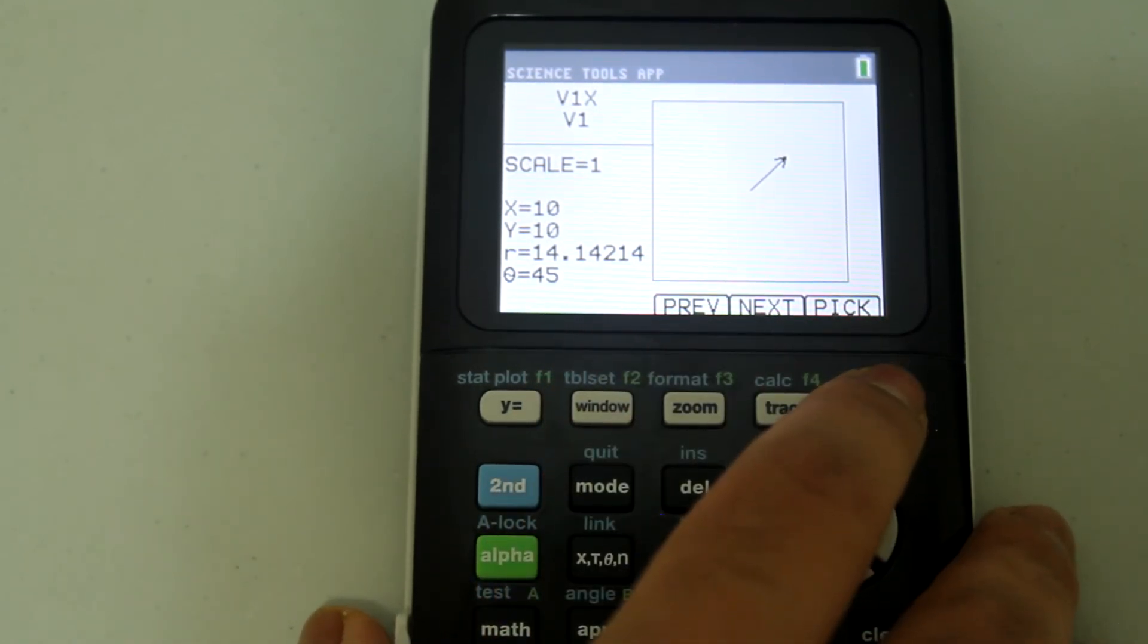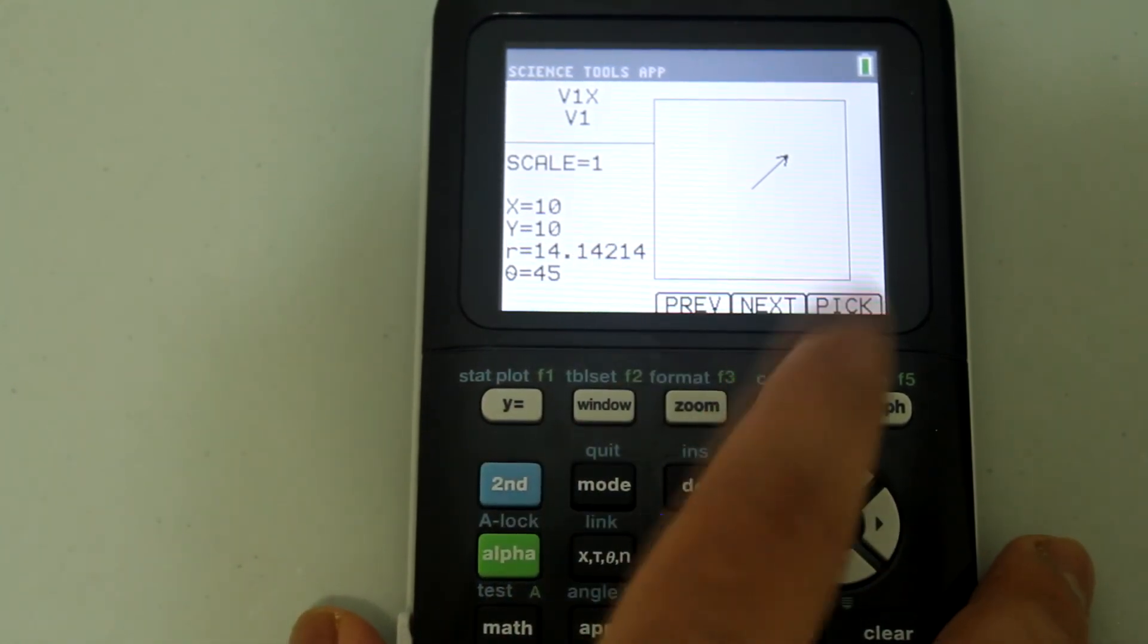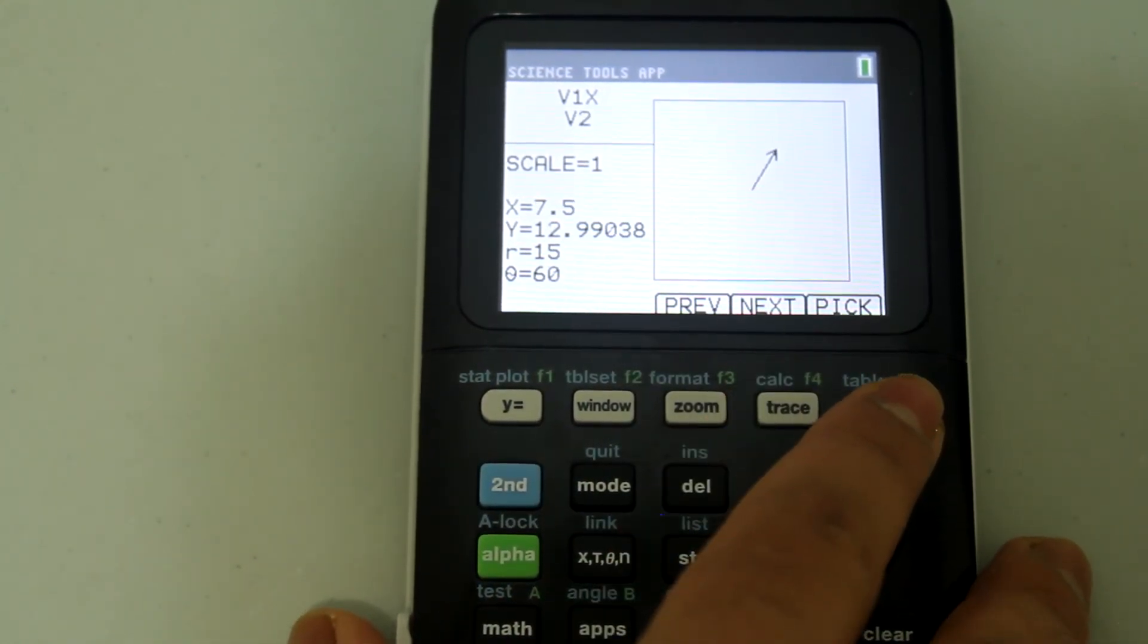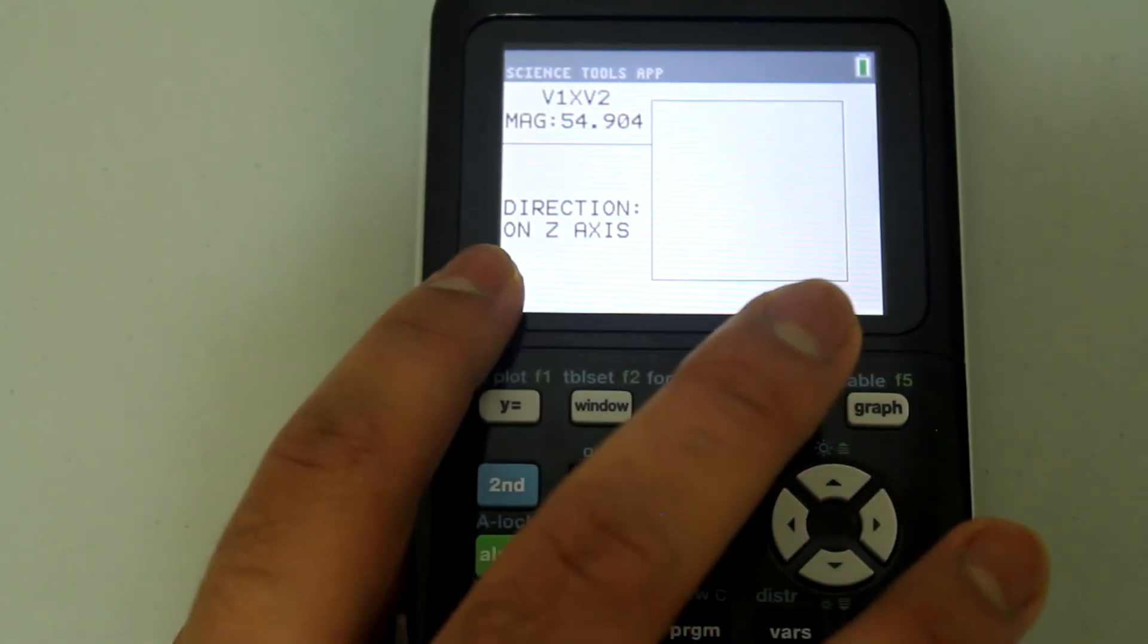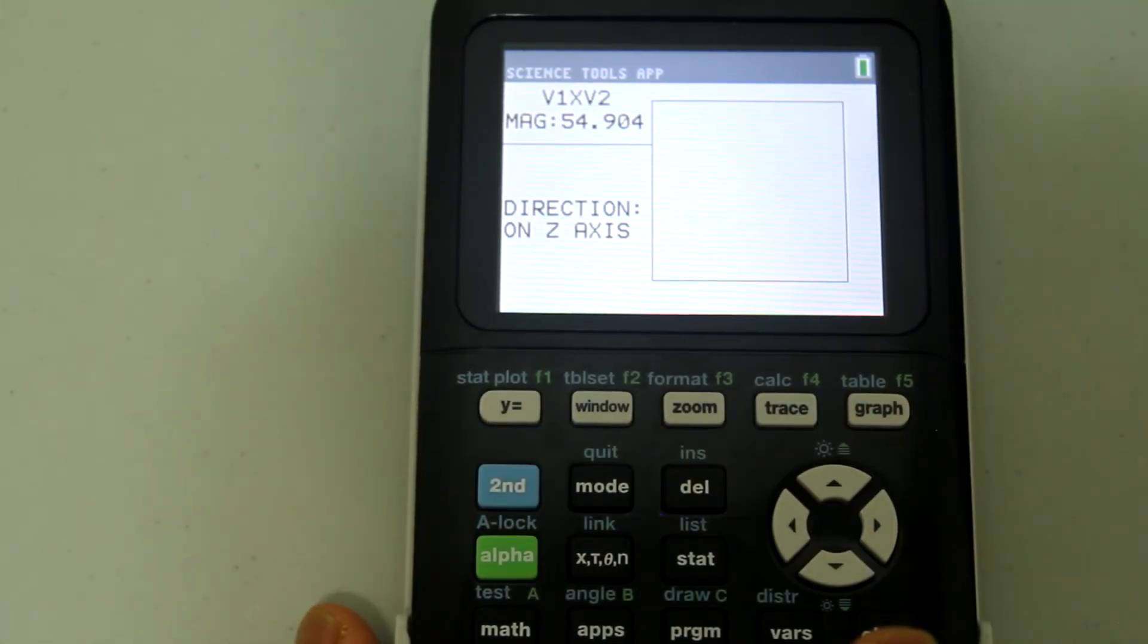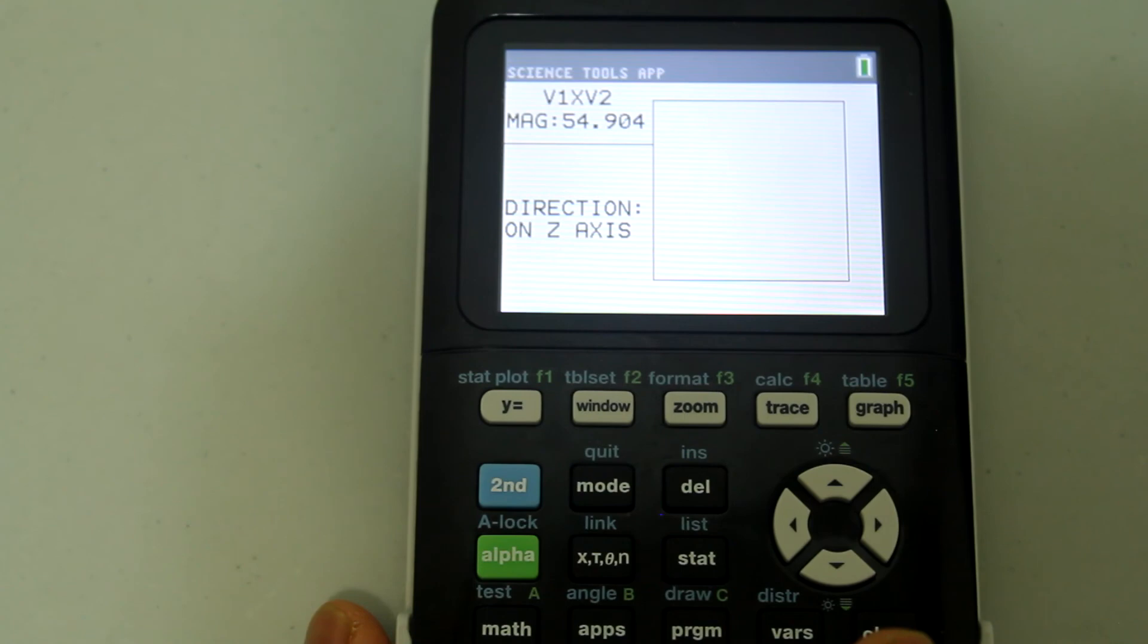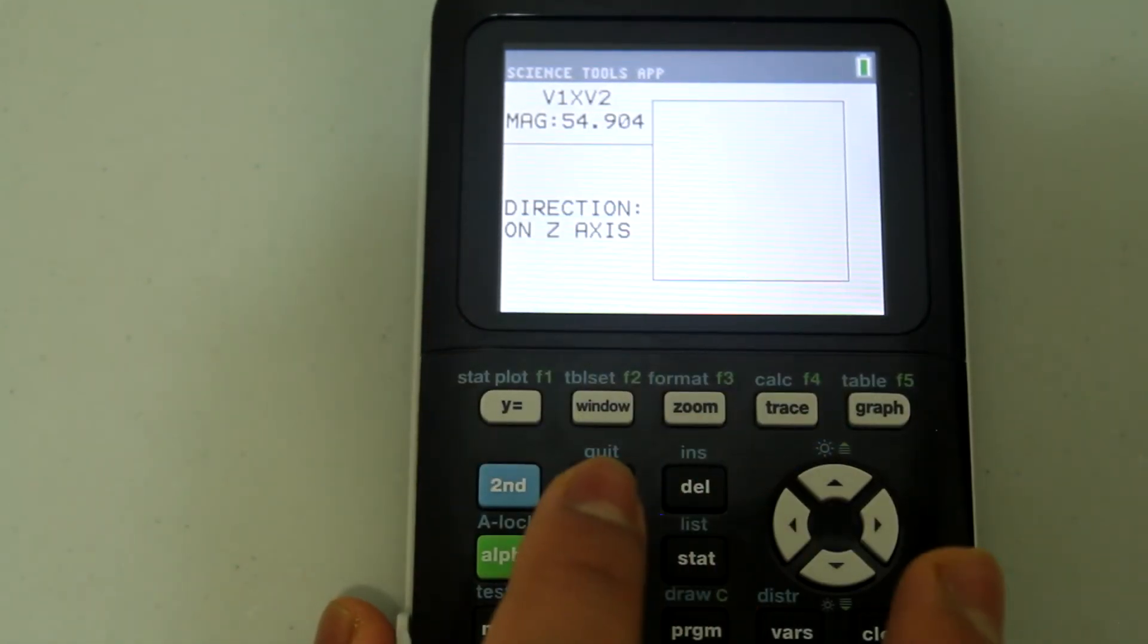No V1 cross V2, so hit next and then pick. It tells us that the direction is on the Z axis and the magnitude is 54.904. We know that the cross product is a vector so it has a direction and a magnitude and we're given those.